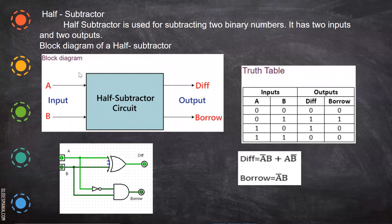In this video we are going to see the half subtractor. Just like in the previous videos we have seen half adder, full adder, and binary adder. The half adder is used to add two bits, the full adder is used to add three bits, and a binary adder can parallelly add four or eight bits and so on.